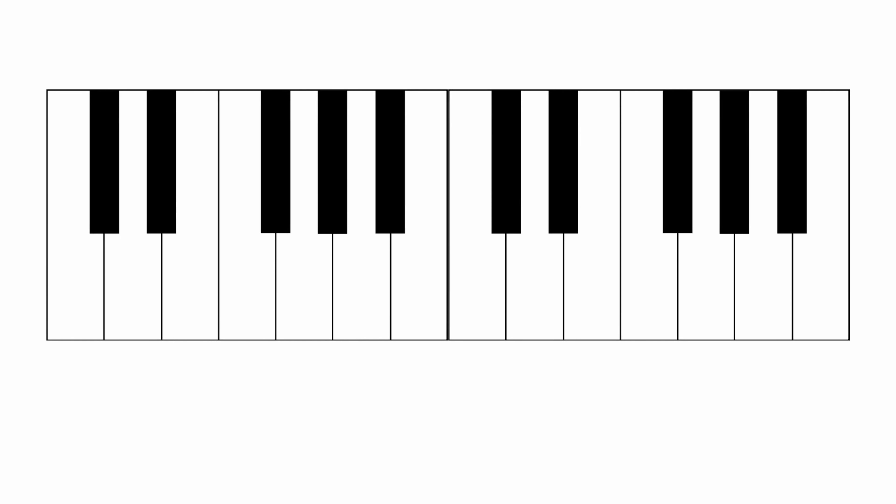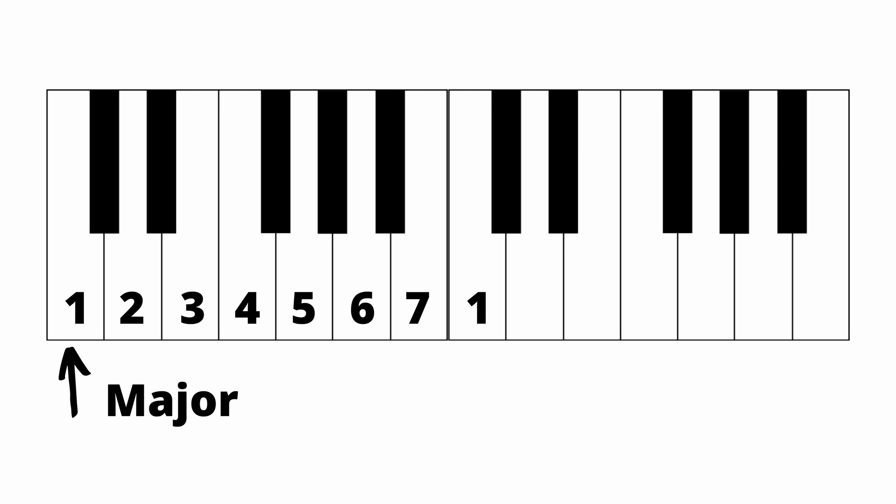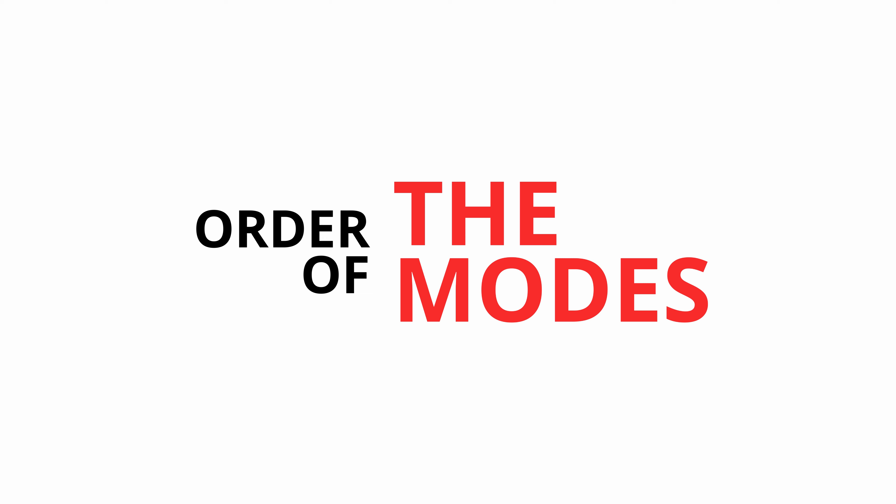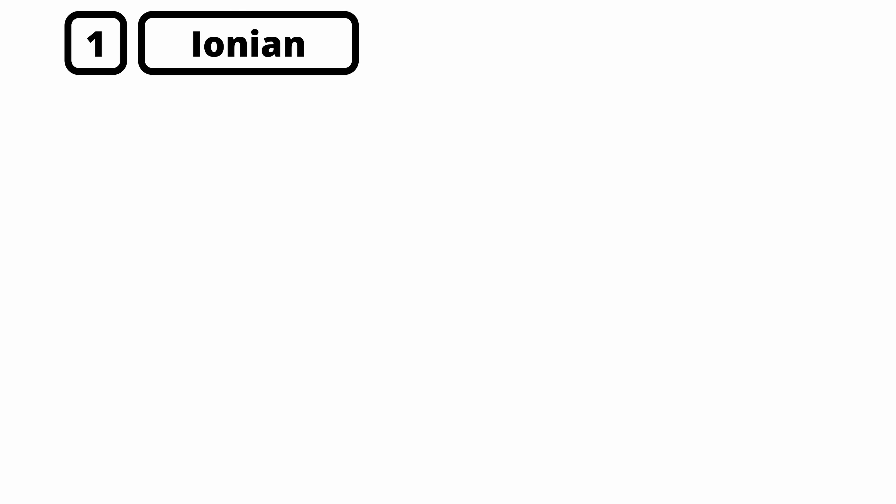For example, the natural minor scale is a mode of the major scale. They use the same notes, but the natural minor scale starts on the sixth degree of the major scale, and so that becomes the tonic of the natural minor scale. Starting on the first degree of the major scale is the Ionian mode, which is just another name for the major scale.